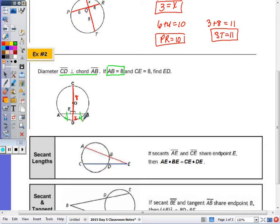Now I have the segments of both chords. So the product of the segments of AB, so 4 times 4 equals the product of the segments of CD, 8 times x. 4 times 4 is 16, and 16 divided by 8, x is 2. X was the length of ED, so the length of ED is 2.